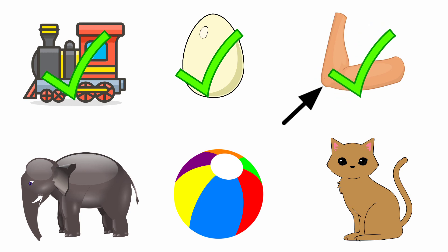Next one — elephant. The beginning sound of the picture 'elephant' is 'eh', and the sound of the letter E is 'eh'. Both are same sounds. So we are going to tick the picture elephant.